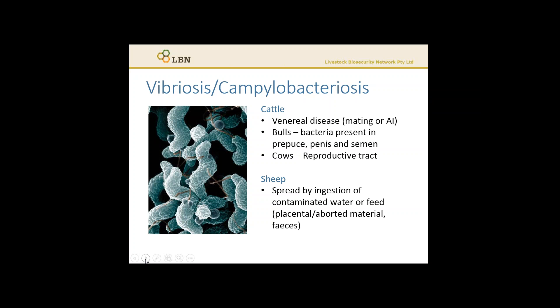Vibriosis is caused by the bacteria Campylobacter, therefore it's sometimes also known as Campylobacteriosis. In cattle, Vibriosis is a venereal disease, which means it's spread by sexual activity. The bacteria are found in the bull in semen, the penis and the prepuce, and in cows the bacteria are found throughout the entire reproductive tract. The bacteria are spread through sexual activity or through artificial insemination where hygiene practices are poor.